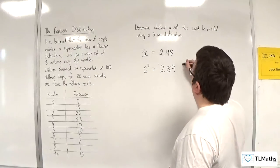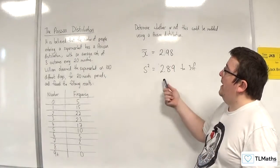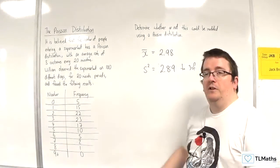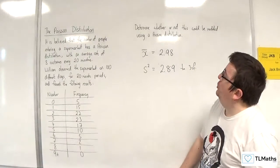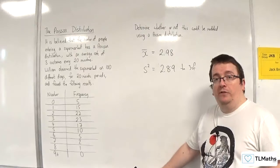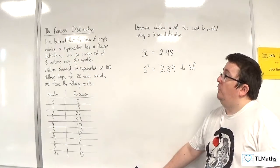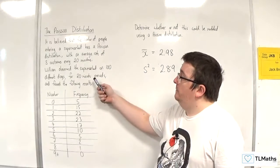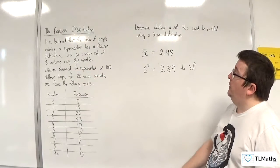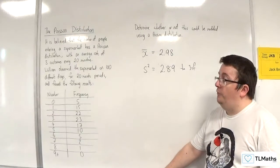So s squared is 2.89 to 3 significant figures. Now, because x bar and s squared here, so your mean and variance, are reasonably similar, you may well come to the conclusion that, okay, with a Poisson distribution, we know that the mean and variance are both lambda. They're both close to the 3 that was identified here. So a Poisson distribution appears to be a good fit for this.